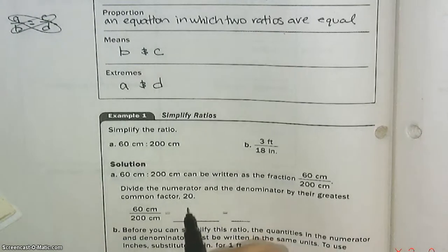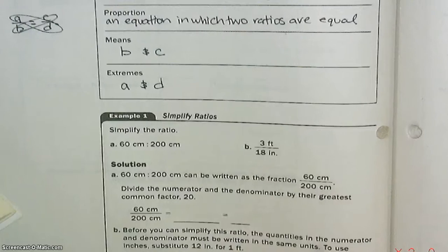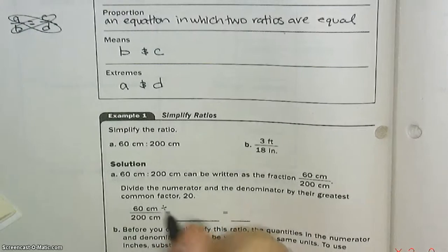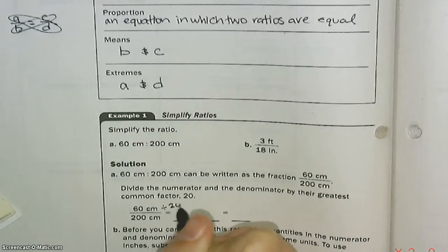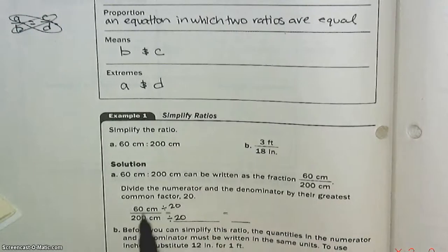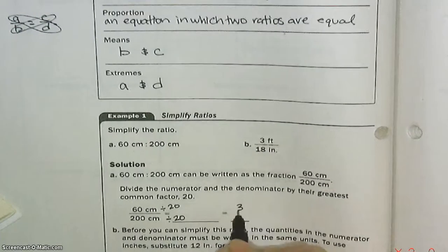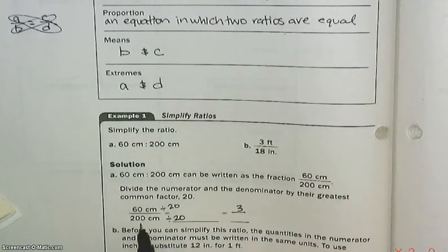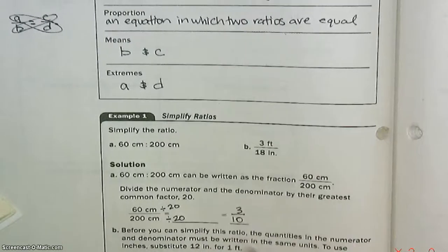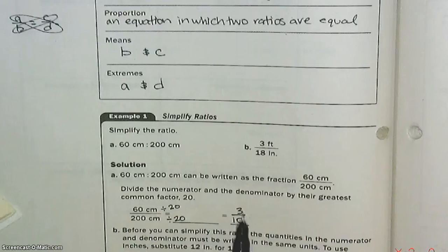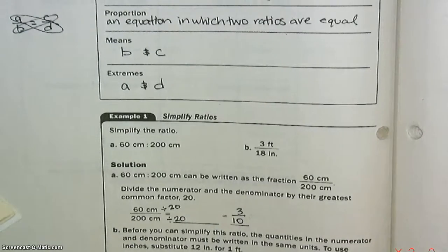Well, 20 does. And you don't have to pick 20, you can pick 10 or 2, it just might take longer. So we're going to divide by 20. 60 divided by 20 is 3, and 200 divided by 20 is 10. Can we go any further? Does anything go into 3 and 10? No. So we've simplified it as much as possible.